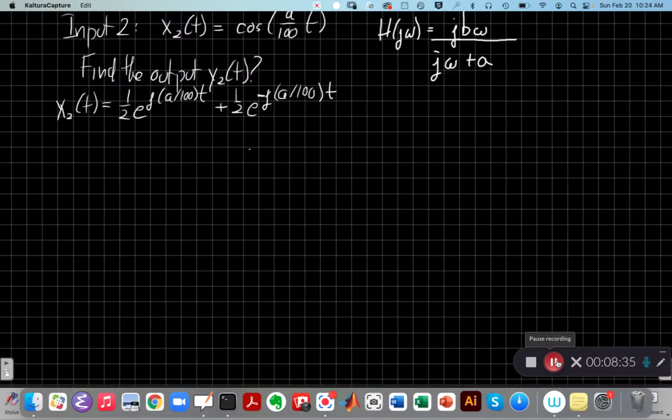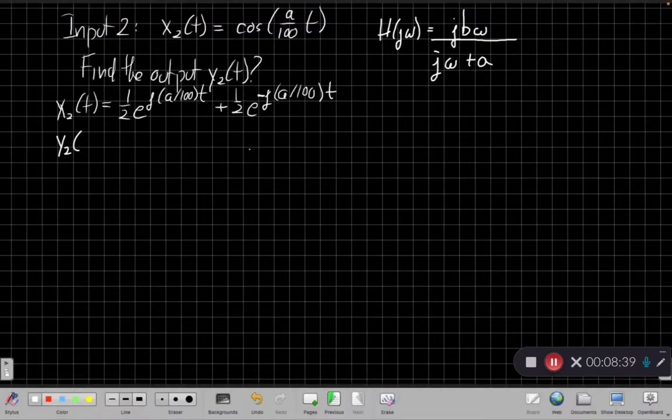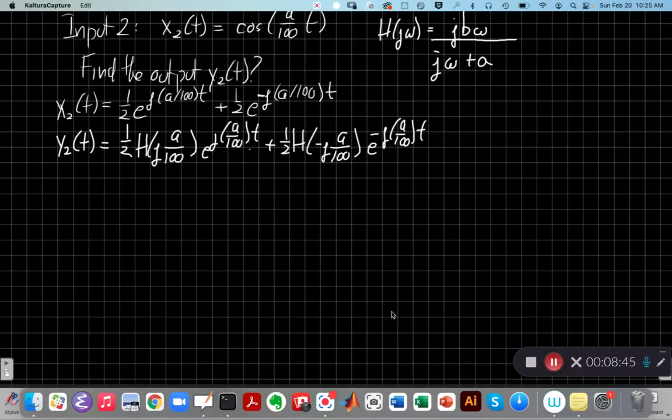And so our next step is to break my input up like this, using the cosine using Euler's, so I can write it out, the output in terms of the frequency response here again. So I've broken the input into the sum of two eigenfunctions, and so my output will be the same eigenfunctions, scaled by the same one-half, but each one with the frequency response, evaluated at ω equals a/100.